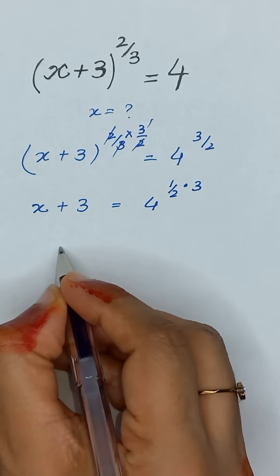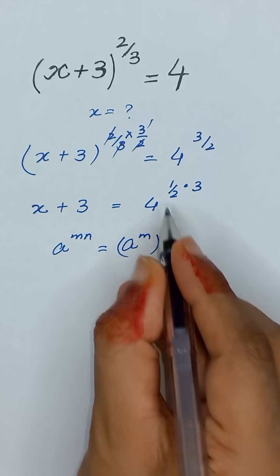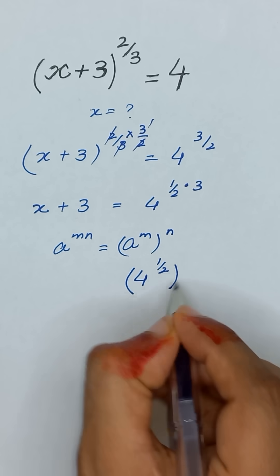As we know that a to the power mn is equal to a to the power m whole power n. So it will become 4 to the power 1 divided by 2 and it's whole power 3.